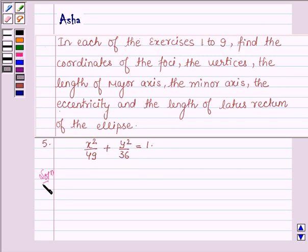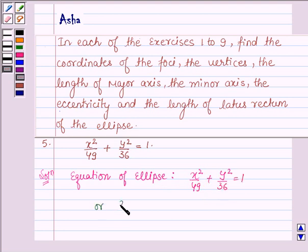Let's start with the solution. The given equation of ellipse is x²/49 + y²/36 = 1, or it can be written as x²/7² + y²/6² = 1.